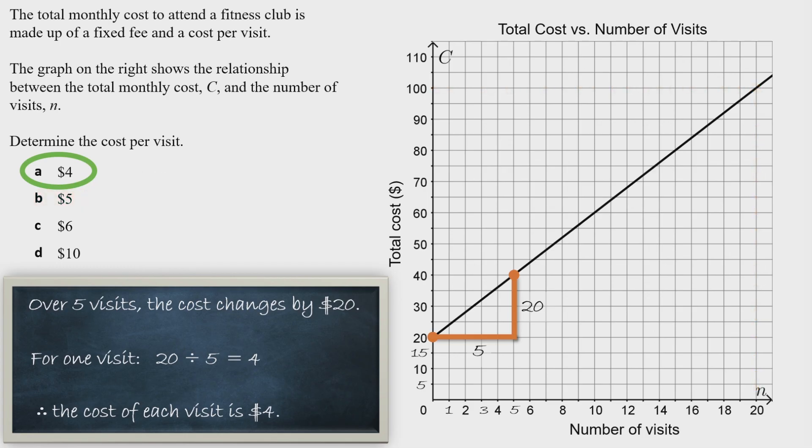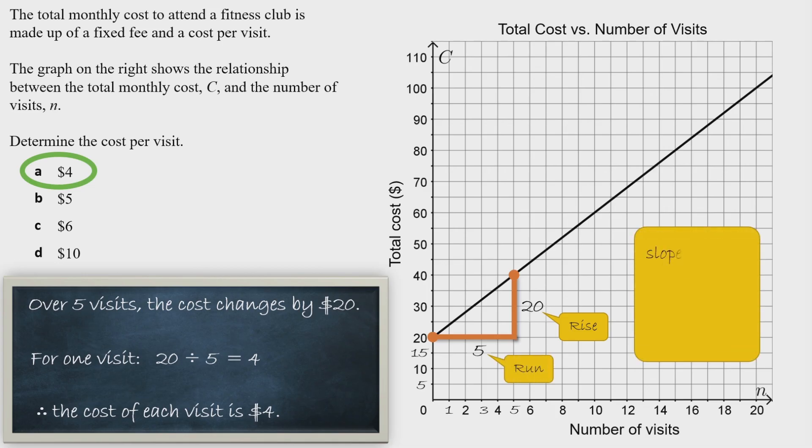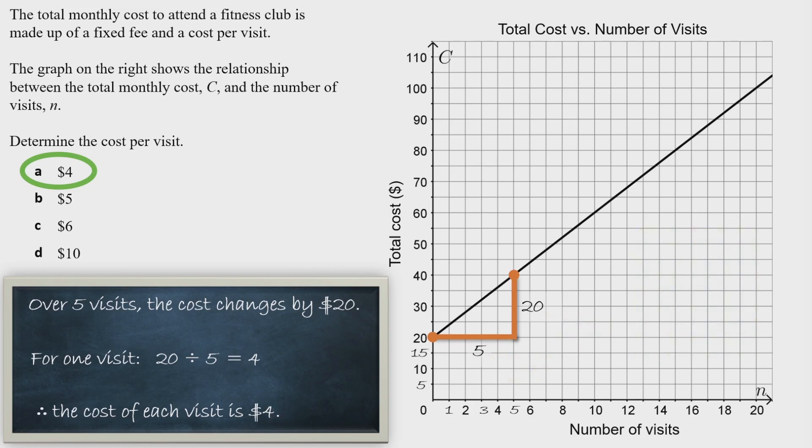Sometimes we refer to these as slope problems. The words we use when talking about slope are rise and run. In this case, 20 is our rise and 5 is our run. To calculate slope, we do rise divided by run: 20 ÷ 5 = 4. That's the same as our $4 per visit.